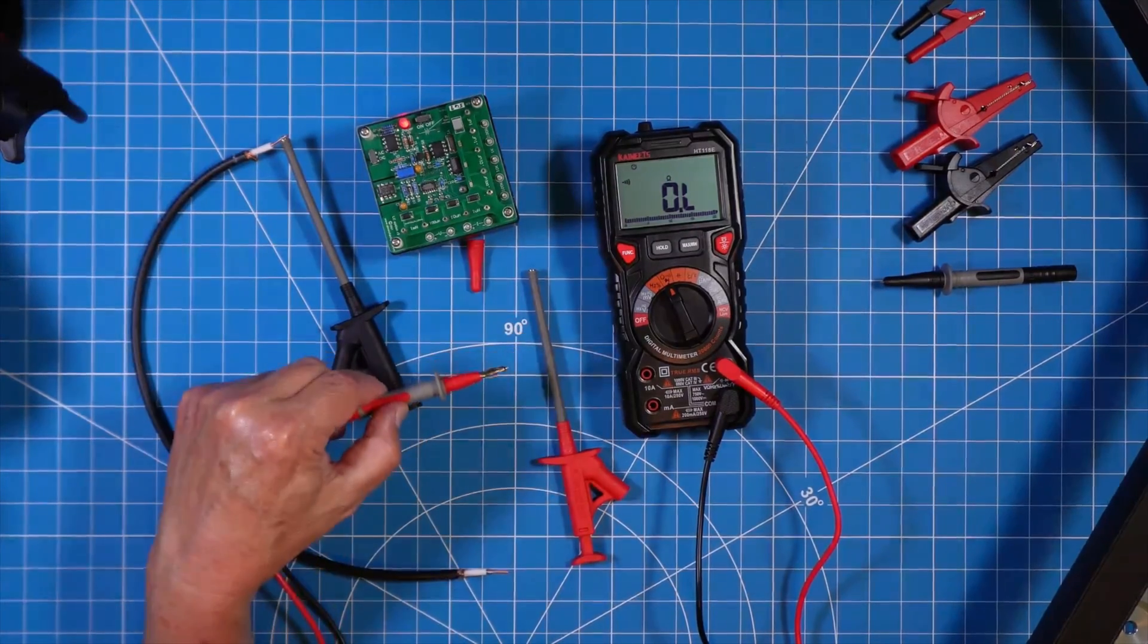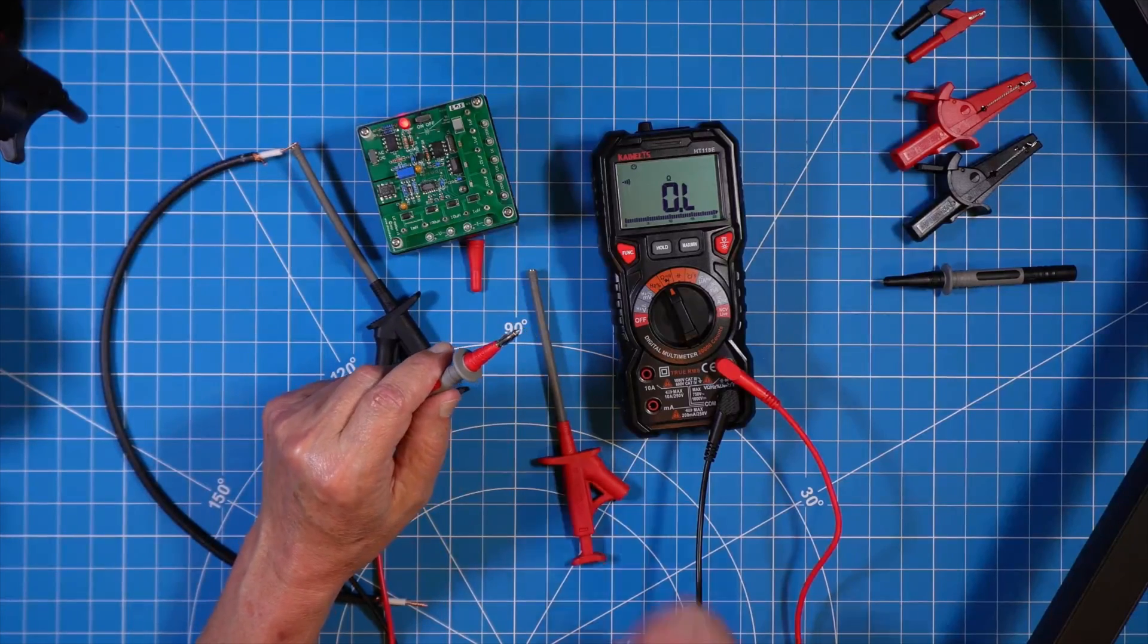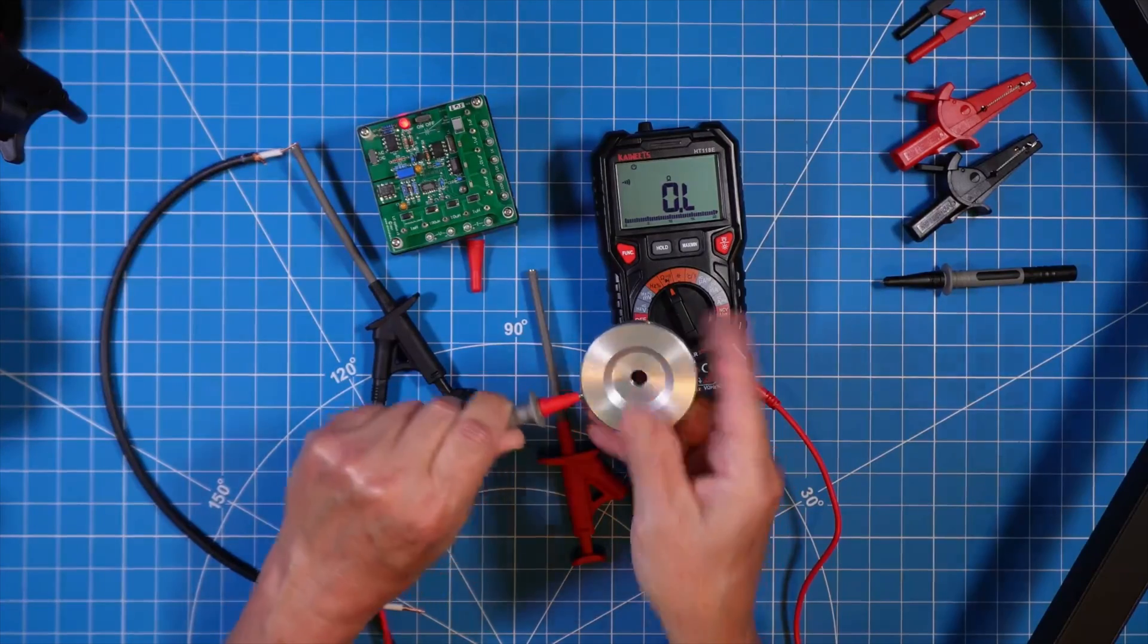And while we're at it with this particular probe, that is a banana plug style probe. This is a radial puck that I use in ham radio. So banana plug, you have a banana plug probe.